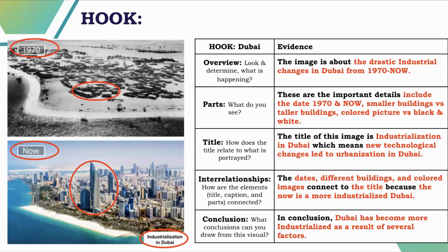Industrialization comes from more than just one factor — it can be political, economic, or social. Unfortunately this image doesn't go into that detail, so I would need to access prior knowledge for more information. Since this is a hook activity I won't go into great detail, but feel free to do so with your students. If you have not modeled OPTIC before, you could have students just identify the title and the parts first. Remember, you should always model your expectations before students do the assignment.